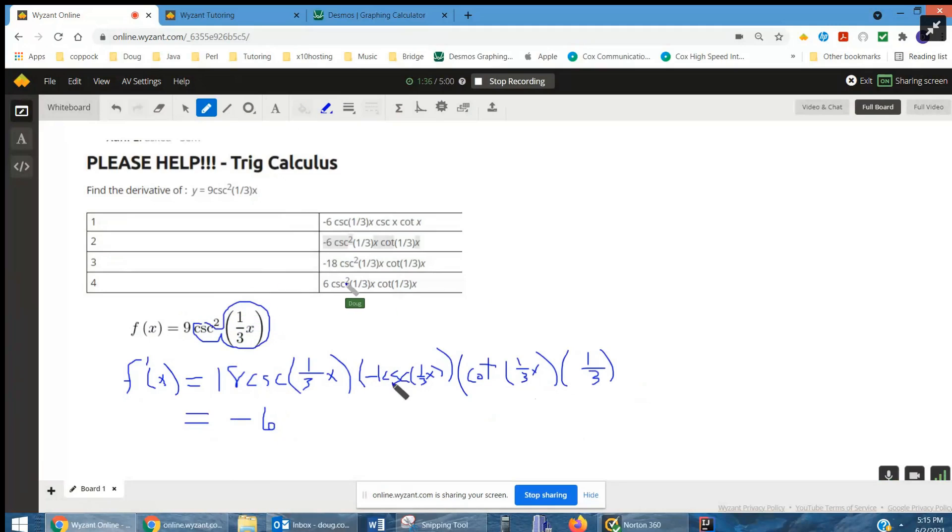We've got two factors of cosecant of one-third x, so I can write those as cosecant squared of one-third x. And then we still have this factor of cotangent of one-third x.